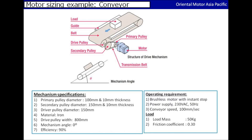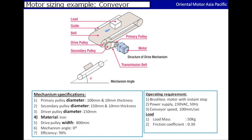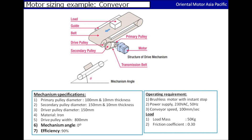Before we use the software, you would need to know the mechanism specifications, operating requirements, and load information. For a basic conveyor, you would have a pulley attached and a belt. The information required for a pulley would be the diameter, thickness, and material. You would also need to know the mechanism tilt angle and the efficiency of the conveyor. If you do not know the efficiency value, you may want to use the standard value of 90%.